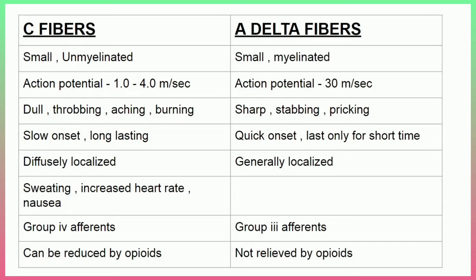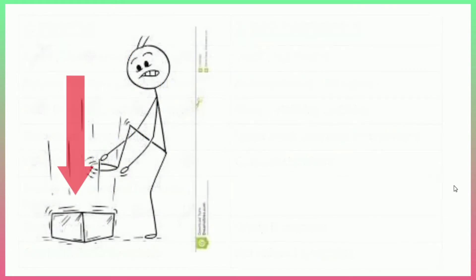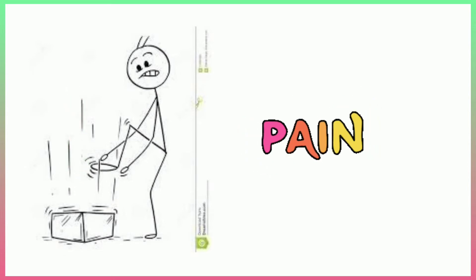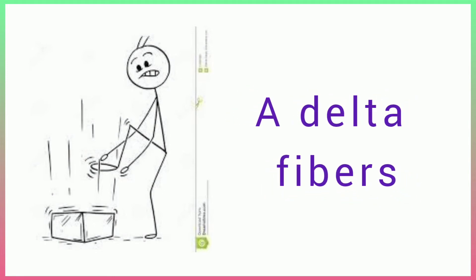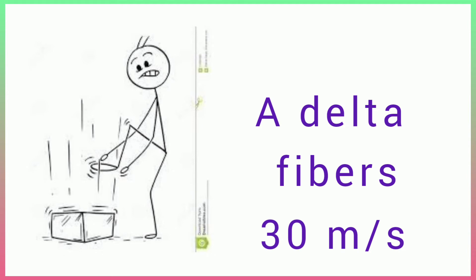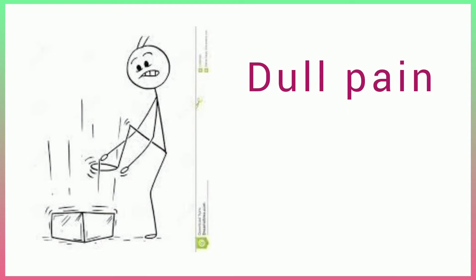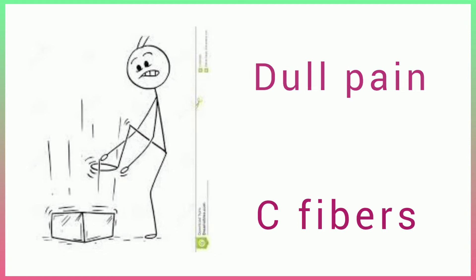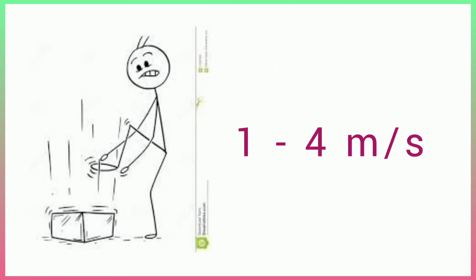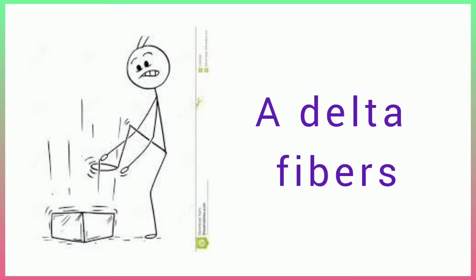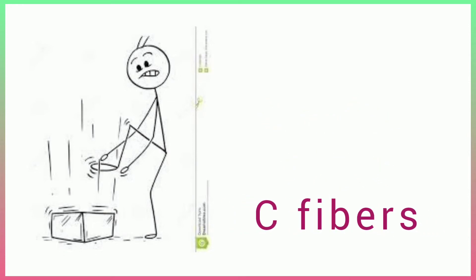Let us consider an example: a heavy object, like a brick, is on our feet. Suddenly we feel a sharp pain, and that sudden pain is because of A-delta fibers, which carry the pain impulse fast at almost 30 meters per second. But the lingering dull pain that follows is because of C fibers, which carry the action potential at only 1–4 meters per second. So the immediate pain is from A-delta fibers and the dull aching pain is from C fibers.